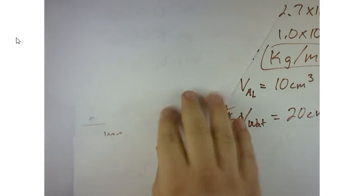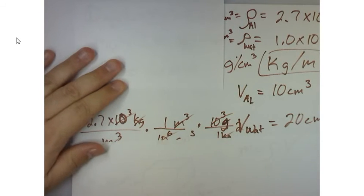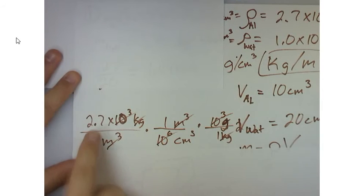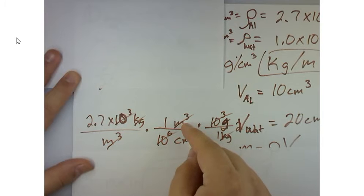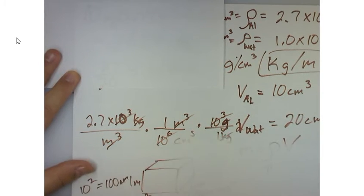So if I convert that to centimeters, I'm going to start with my 2.7 times 10 to the third kilograms over meters cubed. Then I'm going to write 1 meter cubed equals 10 to the sixth centimeters cubed. And I get that from this.